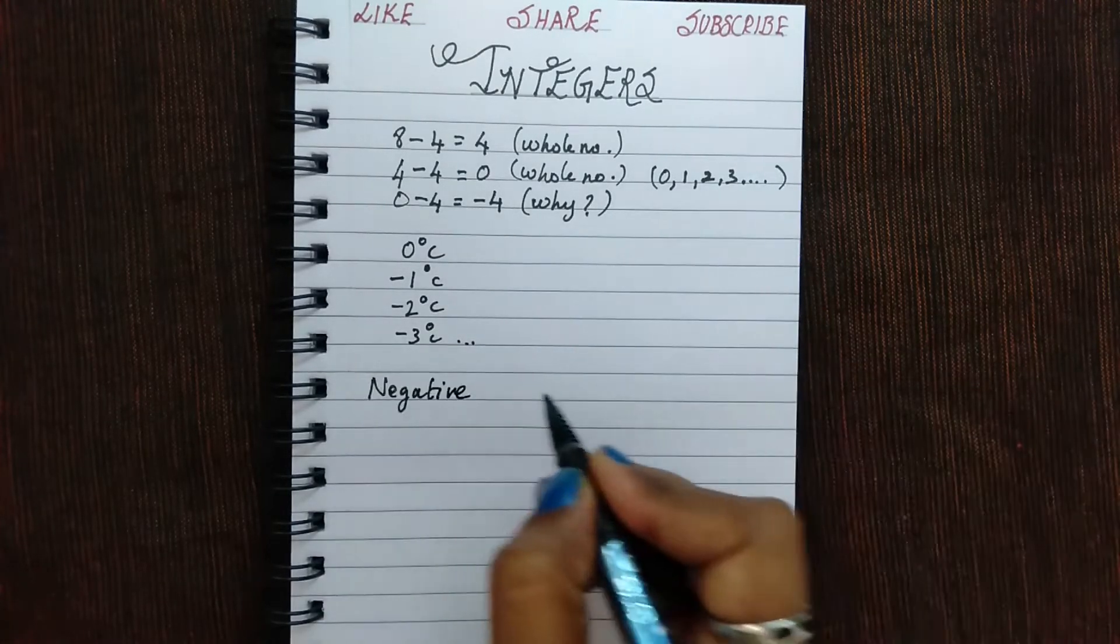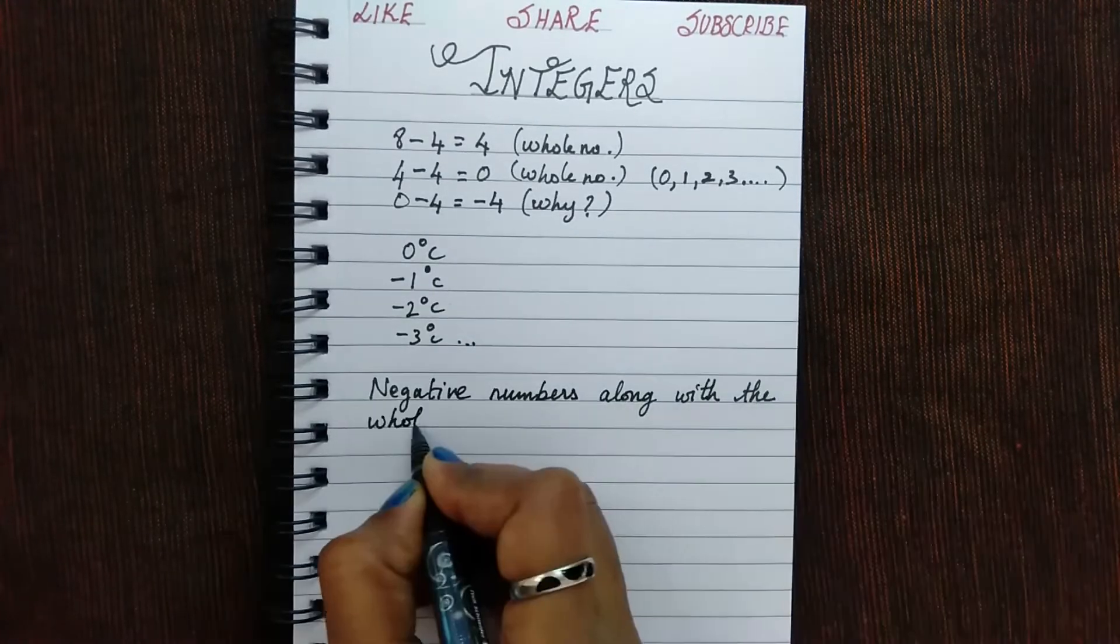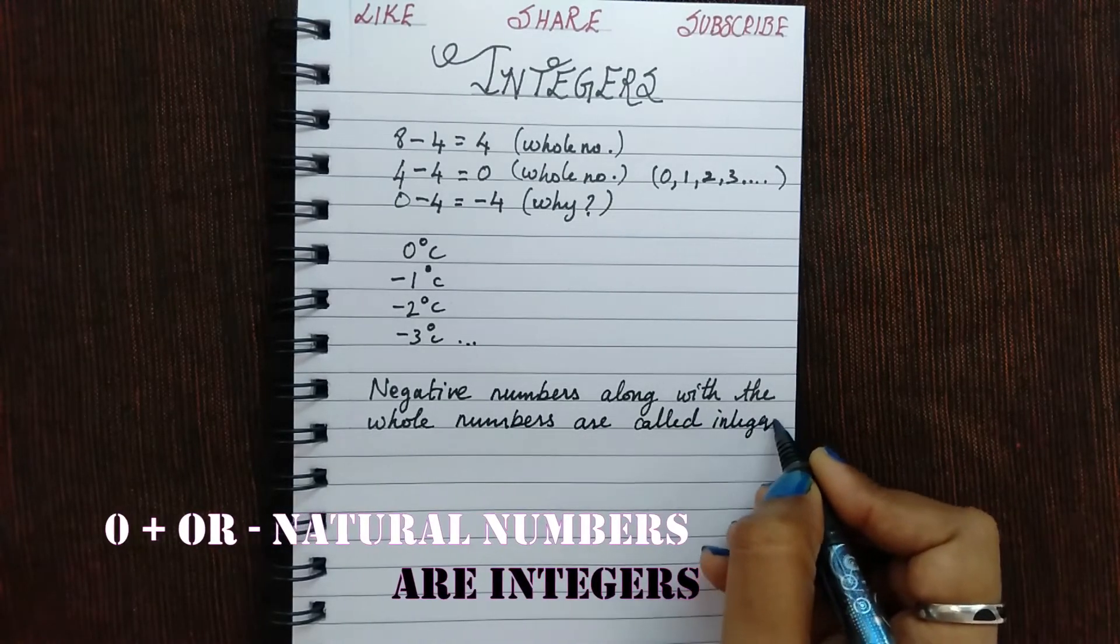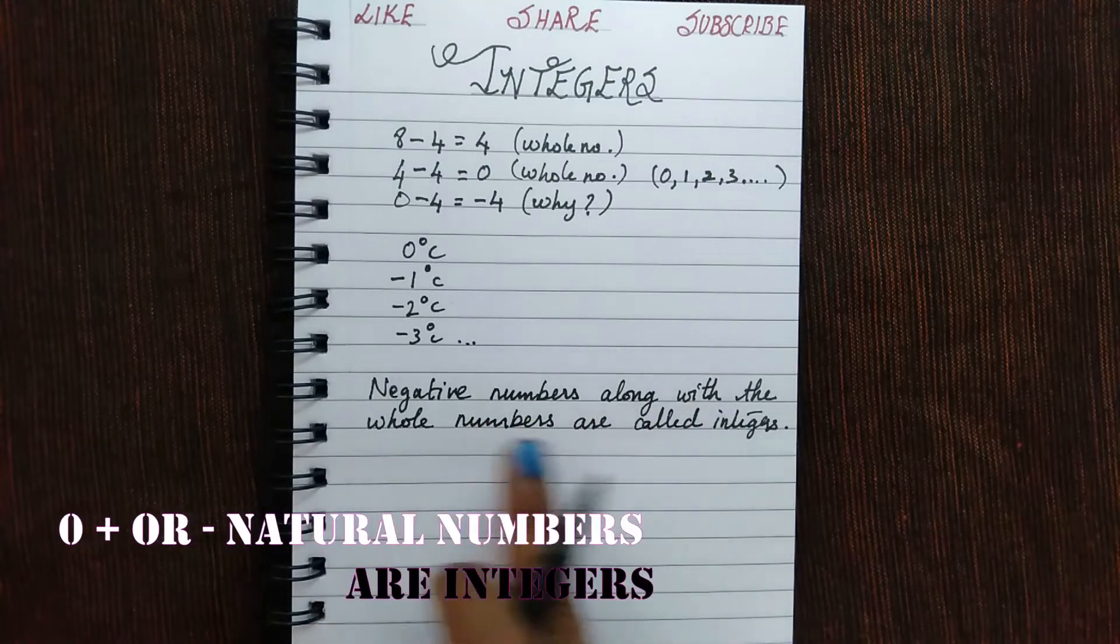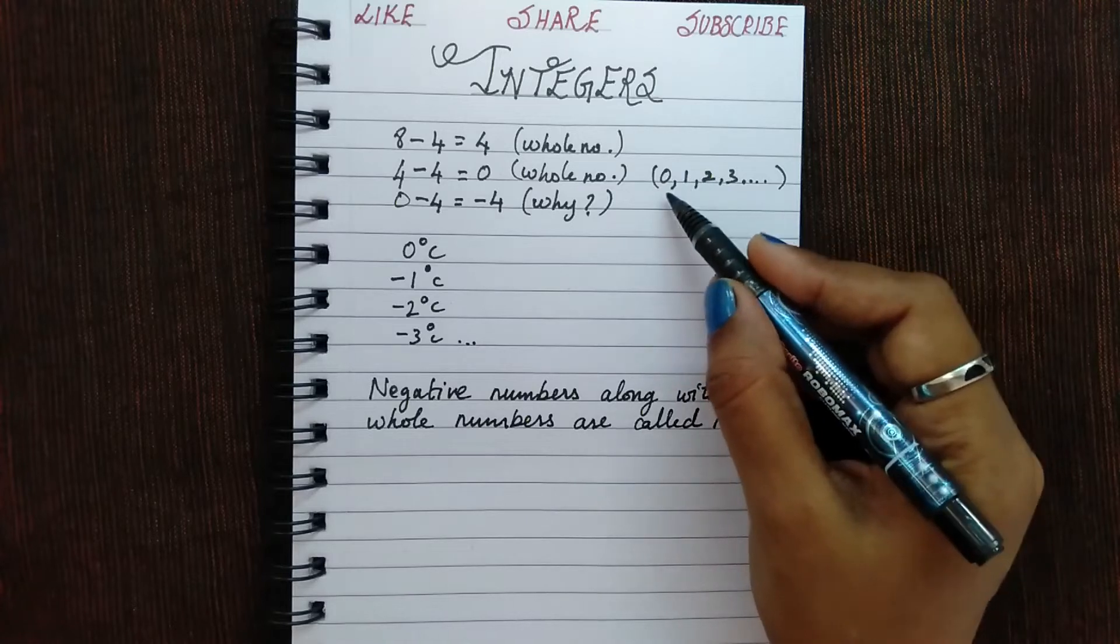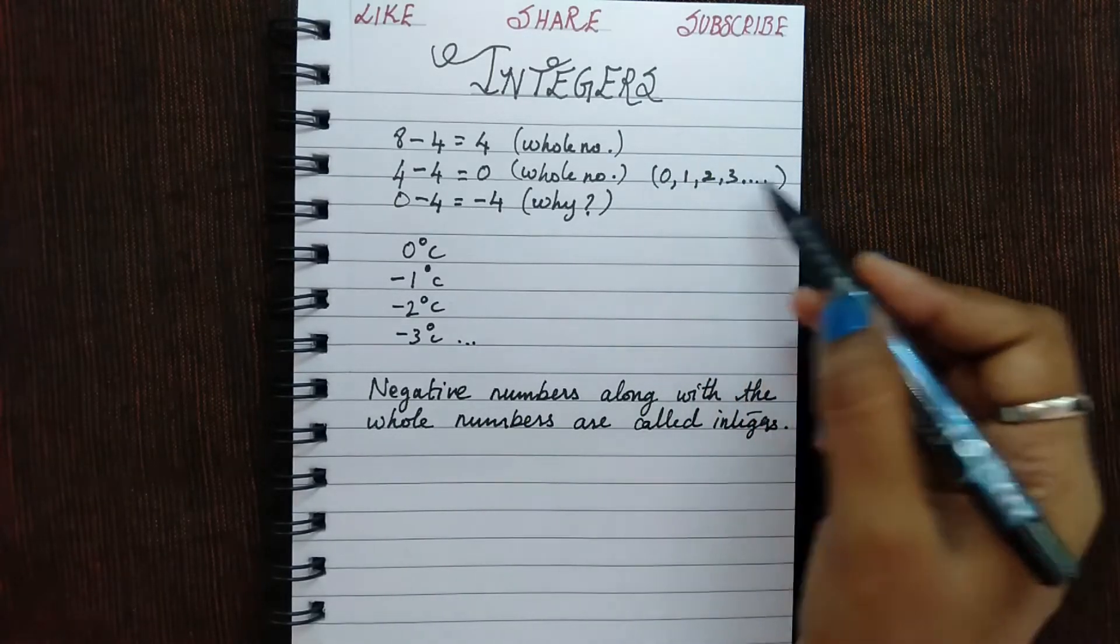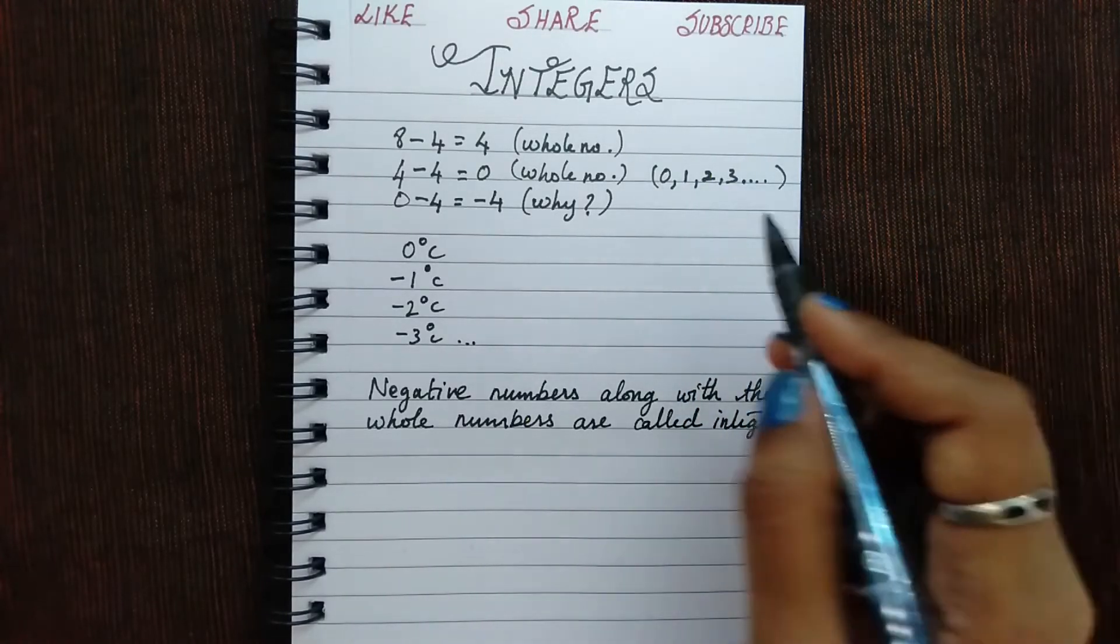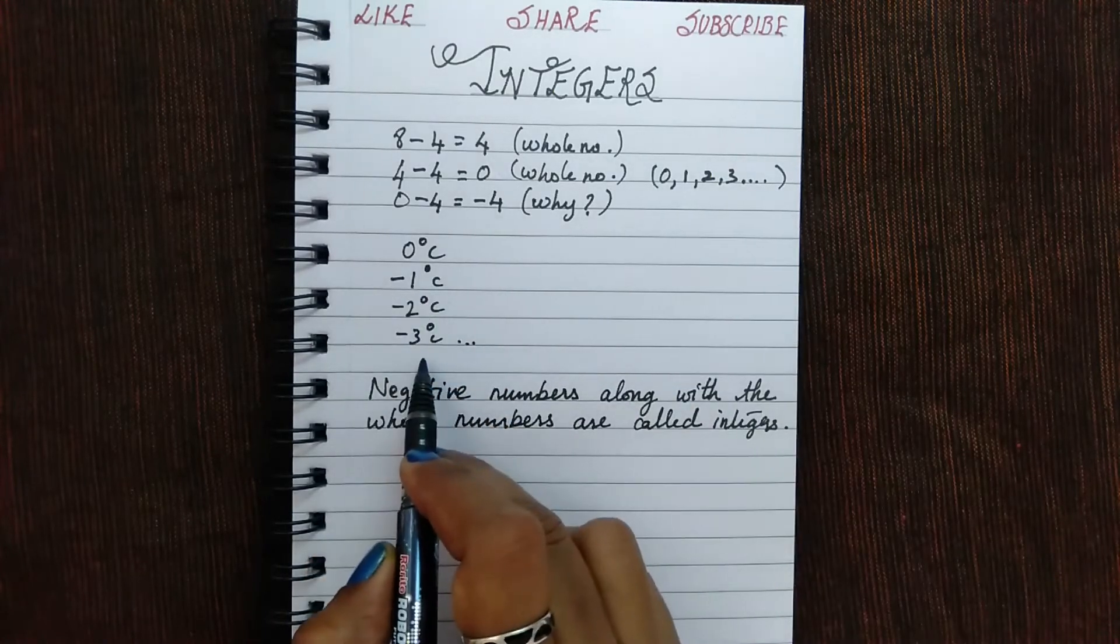Negative numbers along with the whole numbers are called integers. The negative numbers along with the whole numbers are called integers. As you all know, whole numbers are those numbers which start from 0 and it goes in an increasing order till infinity. So 0, 1, 2, 3, 4 and so on are all whole numbers. These whole numbers along with these negative numbers are called integers.